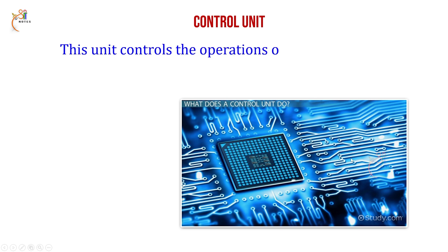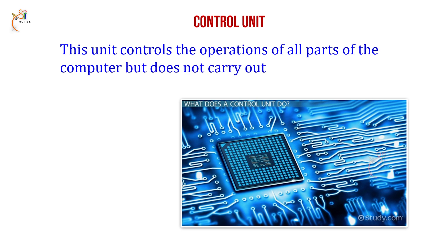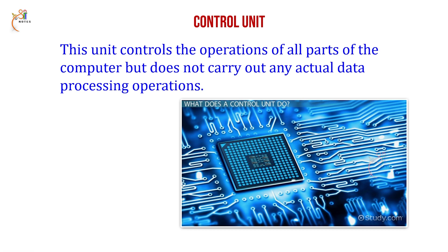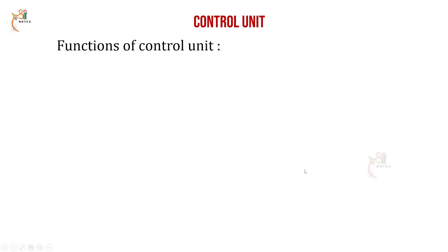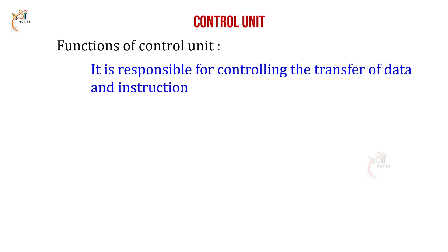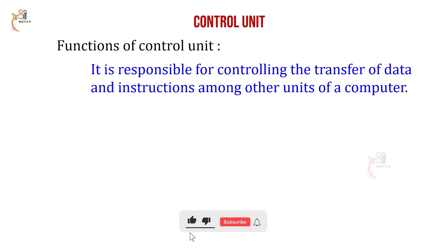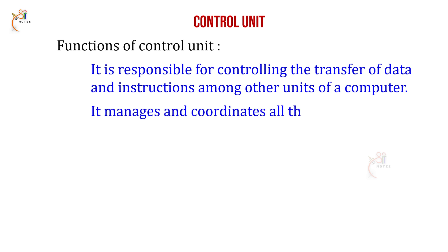The Control Unit controls the operations of all parts of the computer but does not carry out any actual data processing operations. Every operation and every part is controlled by it. It is responsible for controlling the transfer of data and instructions among other units of the computer, and it manages and coordinates all the units of the computer.